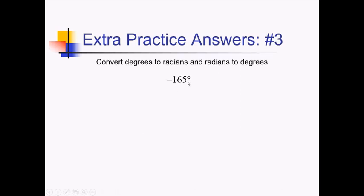For this problem, we're trying to convert this into radians. We'll multiply by pi over 180 degrees and then we just need to reduce this. These are both divisible by 15. If you do the math, this is going to end up being negative 11 pi over 12.